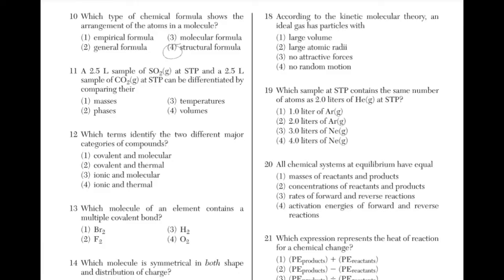A 2.5-liter sample of SO2 at STP and a 2.5-liter sample of CO2 at STP can be differentiated by comparing their masses. At STP, both will have the same temperature. Both samples are gases at 2.5 liters, which means they will have equal volumes.